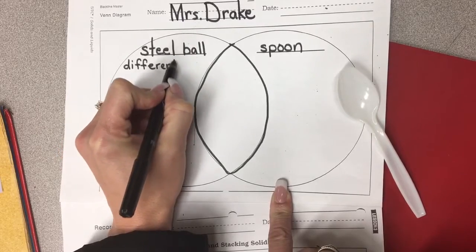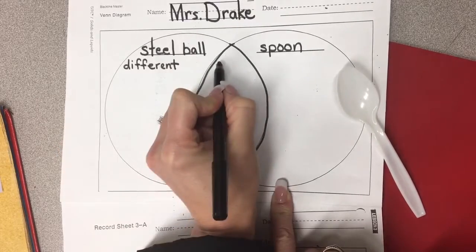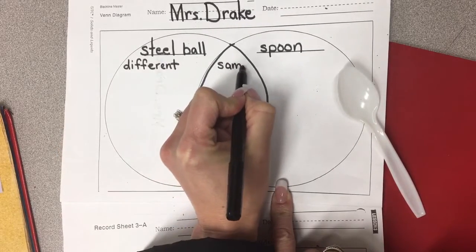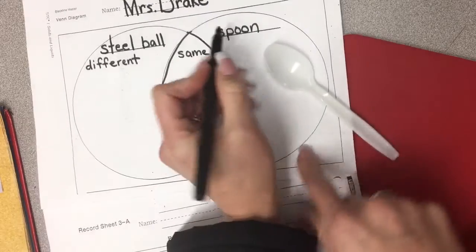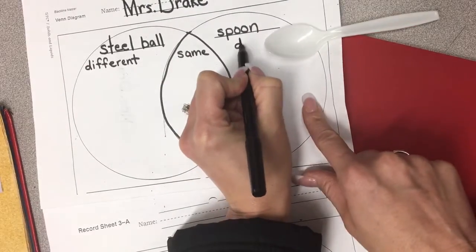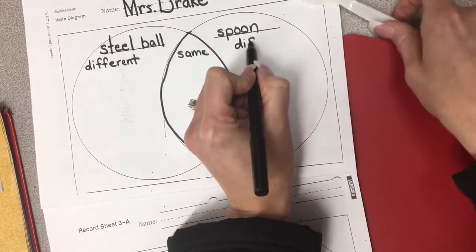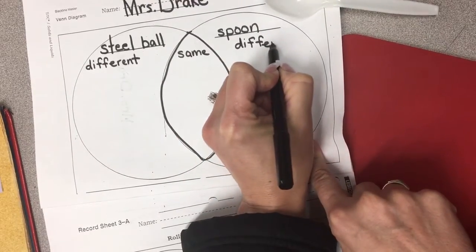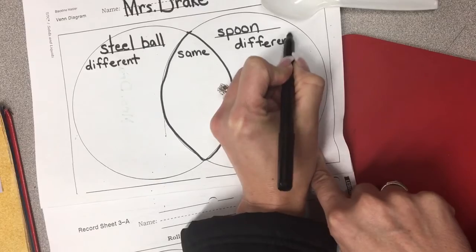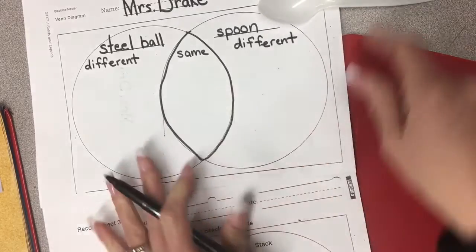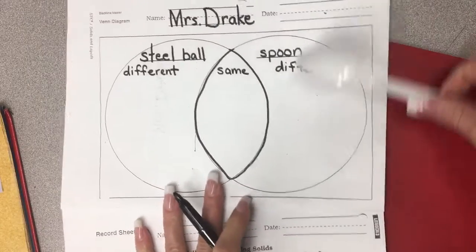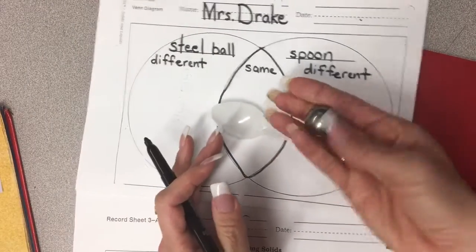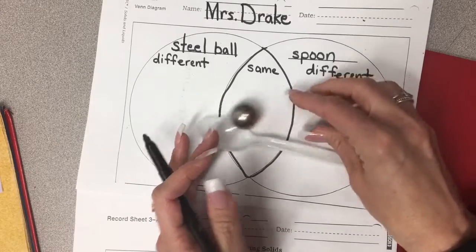I'm going to write 'different' here and 'same' here so you can remember what you're doing. I want you to come up with as many things as you can on your own. Here's an example — you can talk about what they look like on the outside.